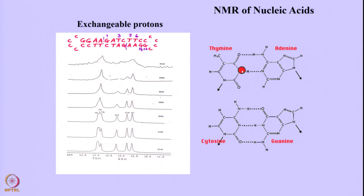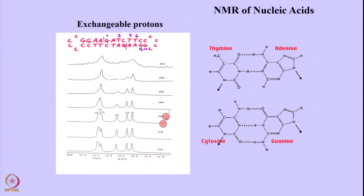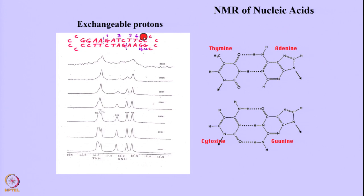In the thymine case the imino is at the N3 position; in guanine it is at the N1 position. We can see how many signals are present — this is shown at different temperatures. At 278 K you can observe all signals; as you slowly increase temperature, you monitor how the duplex responds.